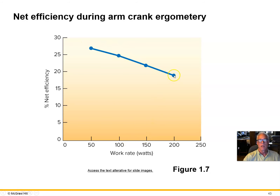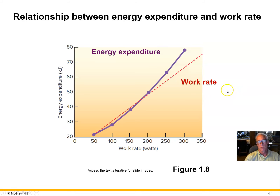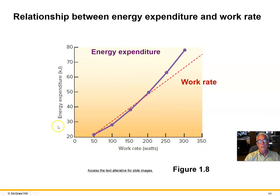Here's a graphical look at efficiency during arm crank ergometry. They measured oxygen consumption and efficiency at each work rate, achieved a steady-state work rate, and found that efficiency starts to drop as work rate increases — demonstrating graphically what we just described.